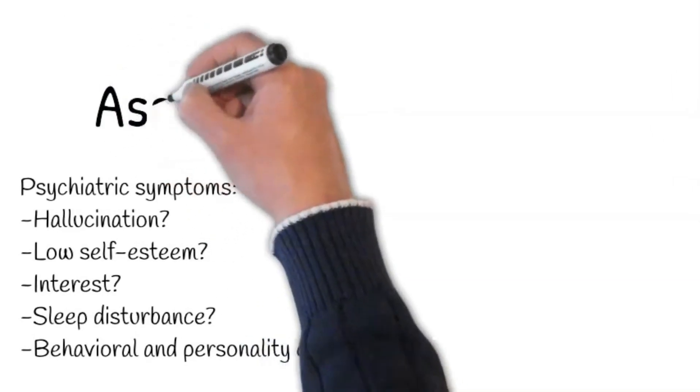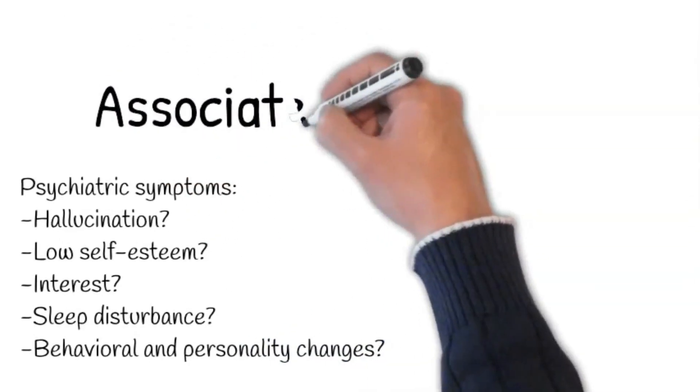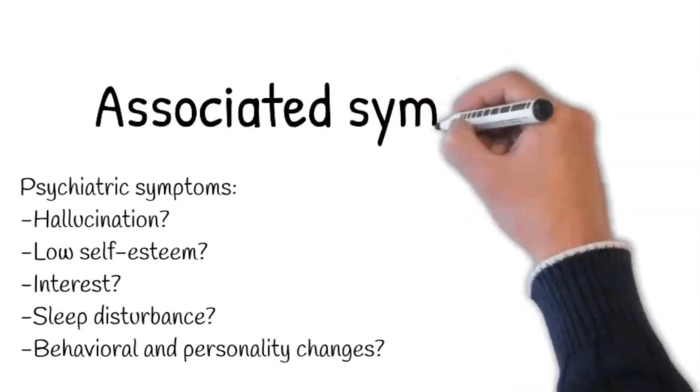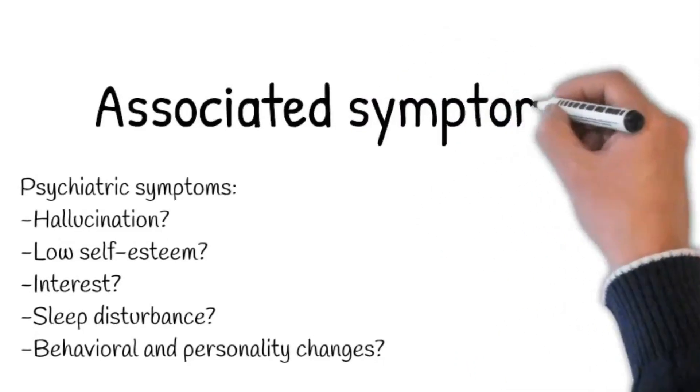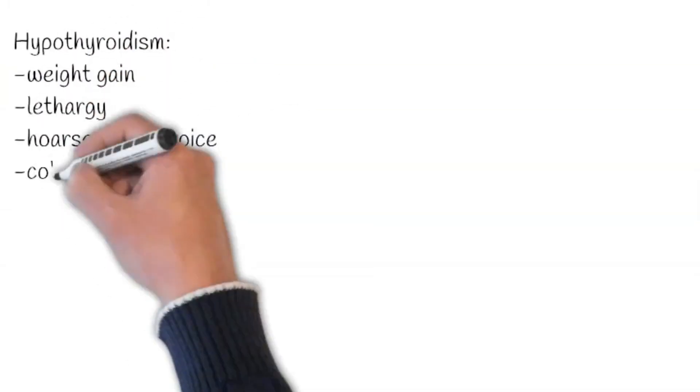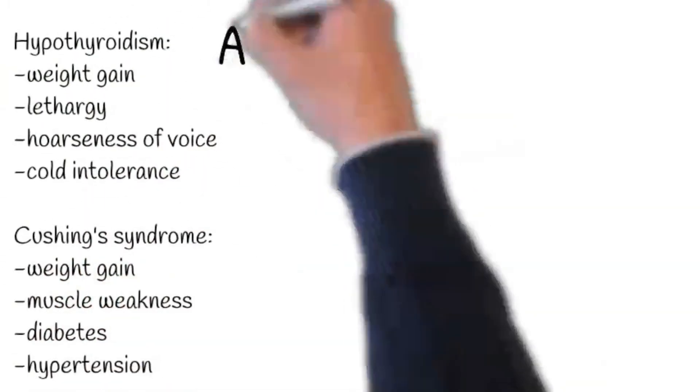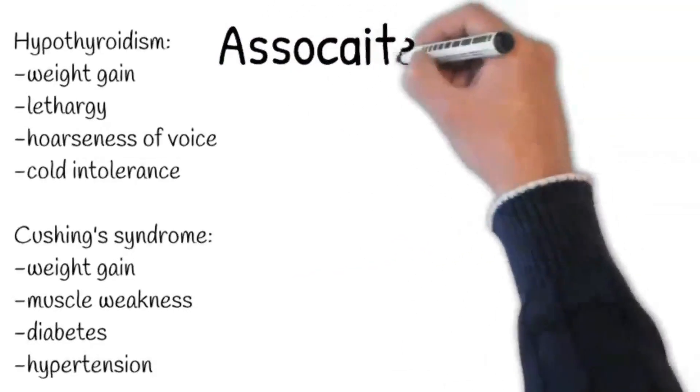Any evidence of sleep disturbance? Ask about recent behavioral and personality changes that are features of frontotemporal lobe dementia and advanced Alzheimer's disease. Moreover, hypothyroidism and Cushing's syndrome can lead to cognitive impairment, particularly short-term memory.